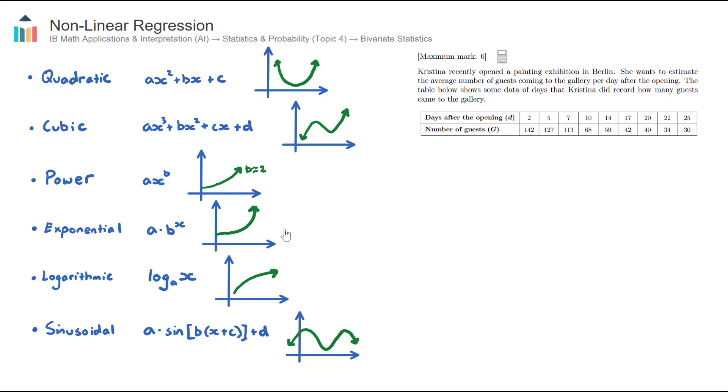Now we're looking at finding models that fit the data that aren't linear. So far it's all been linear, just straight lines, but now we encounter all different types of models. And this kind of ties in with Topic 2 functions with your knowledge of the different types of functions.